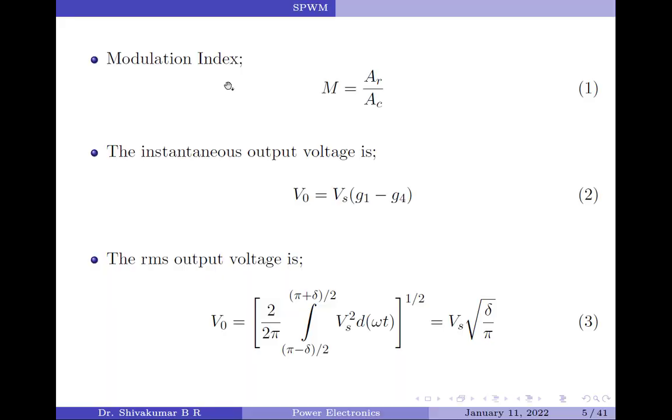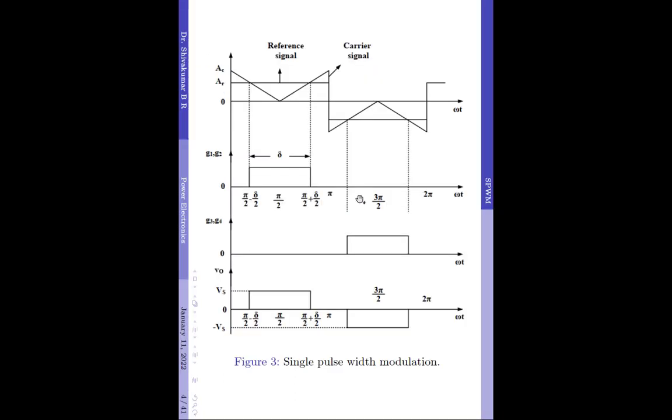Coming to the mathematical part of the discussion, the ratio of AR, which is the reference signal amplitude, to the carrier signal amplitude AC is called the modulation index and it acts as the control variable. The instantaneous output voltage is given by V0 equals to VS which is the supply voltage multiplied by G1 minus G4. G1 is given by this voltage which drives the transistors Q1 and Q2 and G4 represents this voltage which drives the transistors Q3 and Q4 respectively. We already know that the output RMS voltage is equal to VS for a single phase full bridge inverter.